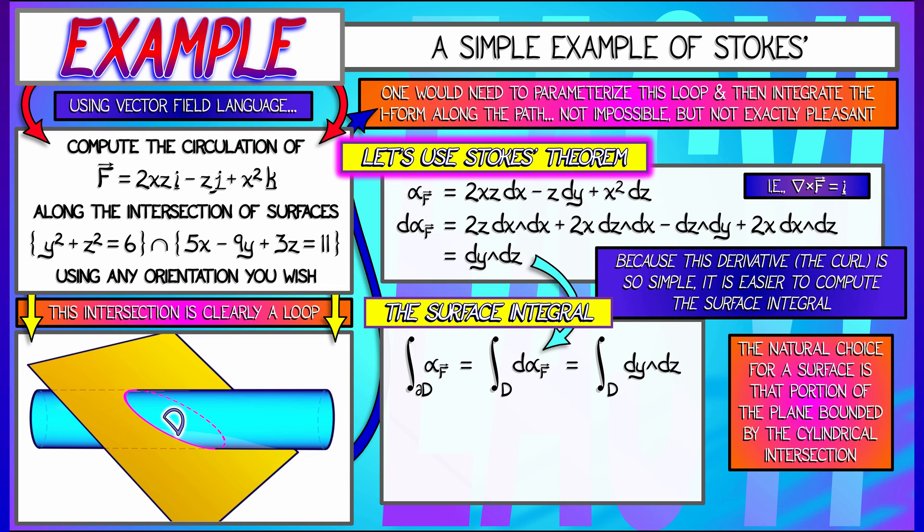Now, since the cylinder opens up along the x-axis, that means it's exactly the cross-sectional area of that cylindrical disk. The cylinder has radius square root of 6, so that area is 6 pi. Oh, I've got to be careful here. It's plus or minus 6 pi, depending on orientation.